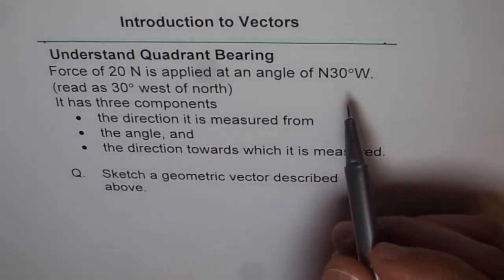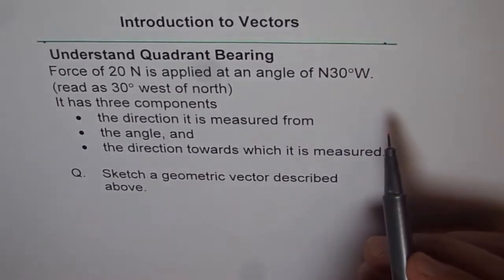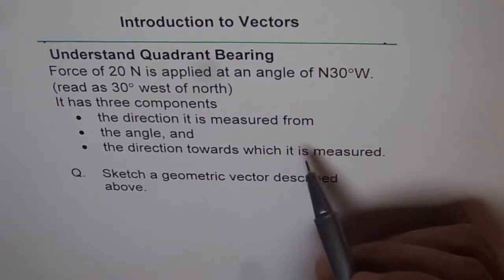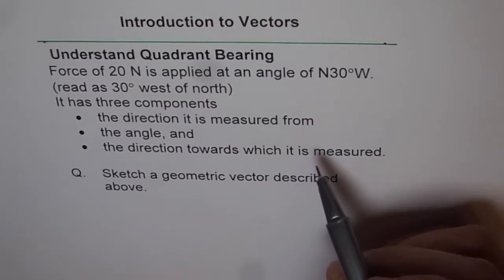Quadrant bearing is represented as a deviation from north-south line. So with this example we will explore quadrant bearing.